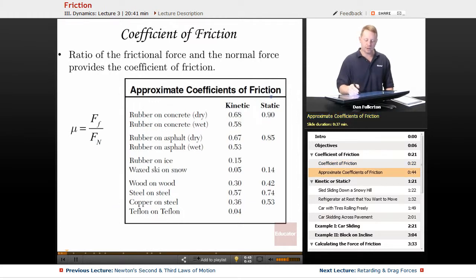Here are some approximate coefficients of friction for different types of friction. Kinetic friction is objects that are sliding against each other. Static friction is objects that are not sliding against each other. So rubber on dry concrete, for example, has a kinetic coefficient of 0.68 and a static coefficient of 0.9.